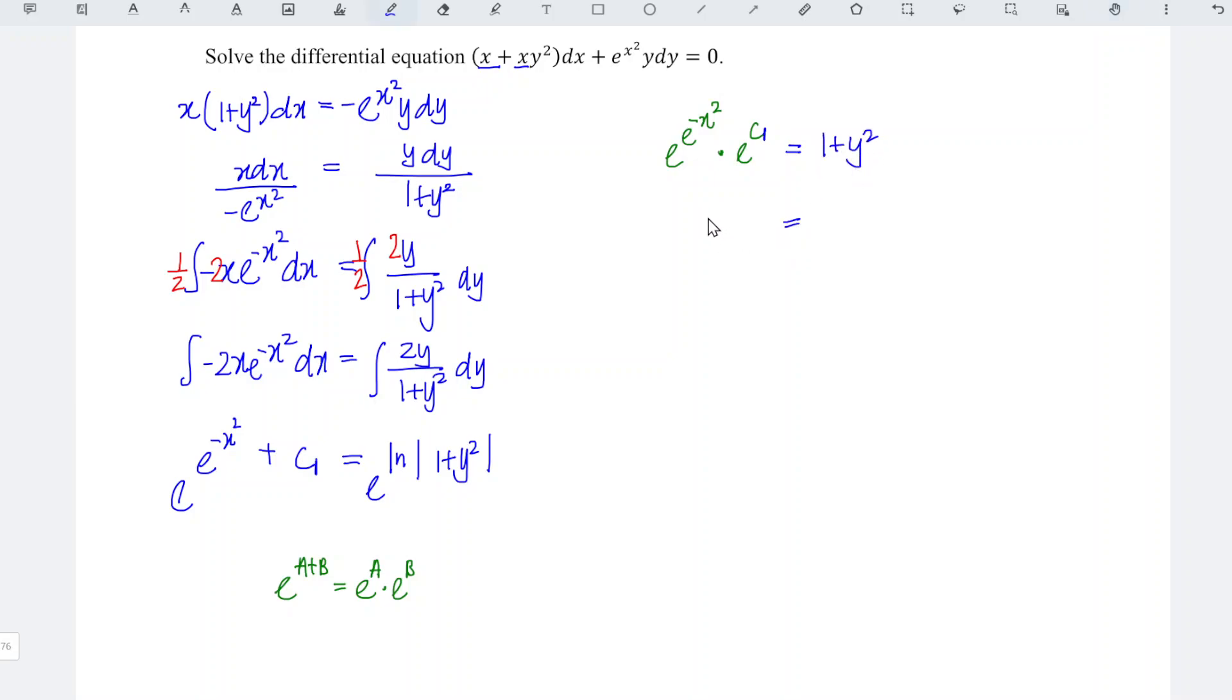And this is equal to c2 e to the power of negative x square. Where c2 is equal to e to the power of c1.